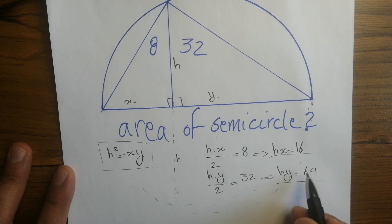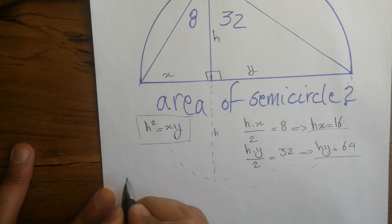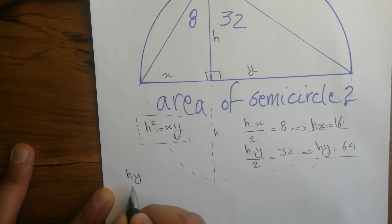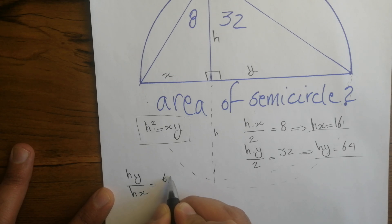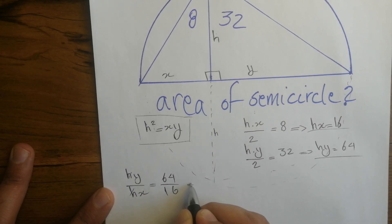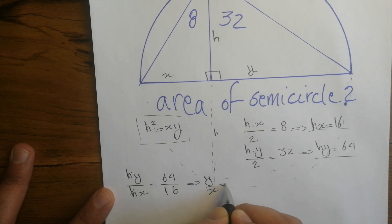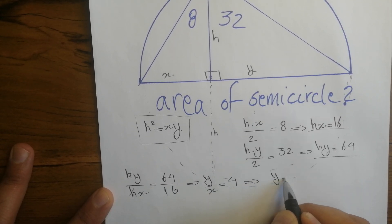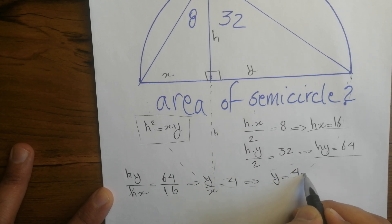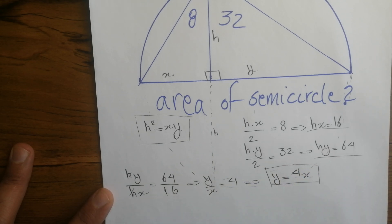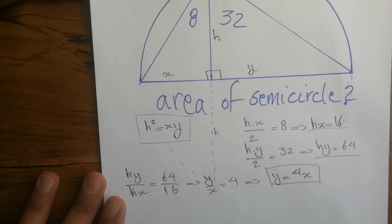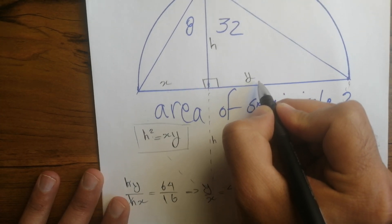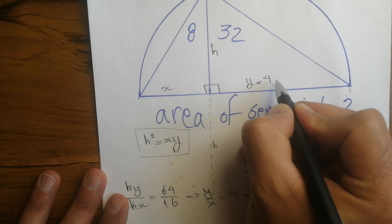Now let's divide the second equation by the first: hy over hx equals 64 over 16, which equals 4. The h cancels, so y over x equals 4, meaning y equals 4x. And since the full diameter is x plus y, that gives us a diameter of 5x.